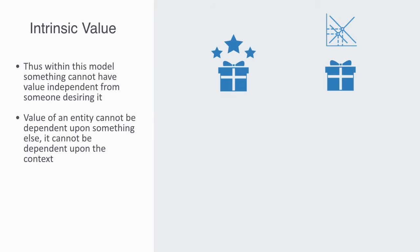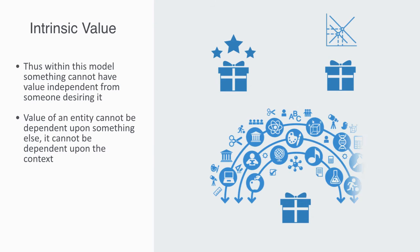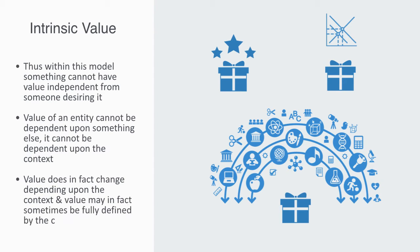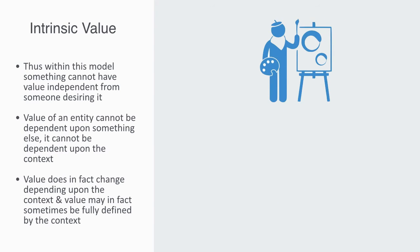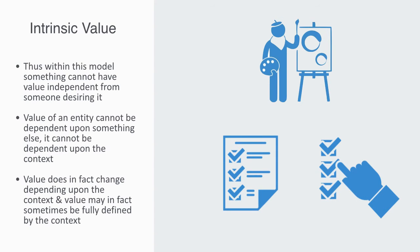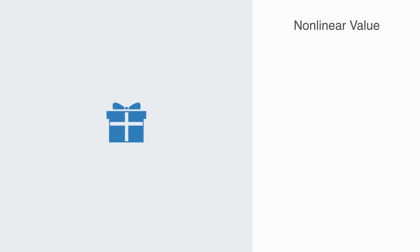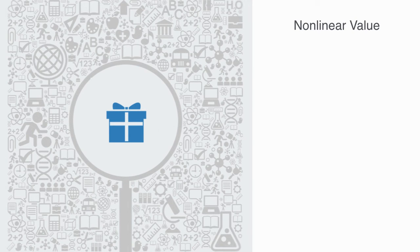And this is where the theory and the data diverge. Many experiments from behavioral economics tell us that value does in fact change depending upon the context. Not only this, but value may in fact sometimes be fully defined by the context, which is way outside the model. For example, the value of a color is dependent upon what color is placed next to it. The perceived value of a product in a magazine is dependent upon other products in that magazine that they were never going to purchase. With hyperbolic discounting, our preferences for different payoffs is dependent upon the context of time.